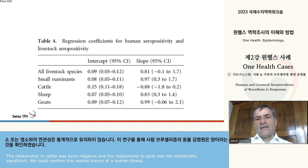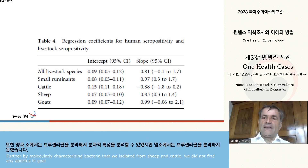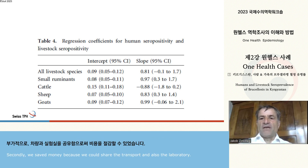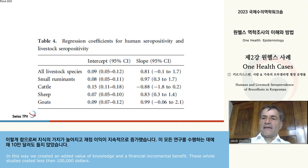We could confirm this animal source of human illness further by molecularly characterizing bacteria that we isolated from sheep and cattle. We did not find any abortion in goat. This is a One Health study because in one study, we could find a zoonotic relationship that we could never find if we only studied humans or only animals. Secondly, we saved money because we could share the transport and also the laboratory. In this way, we created an added value of knowledge and a financial incremental benefit. This whole study cost less than $100,000.